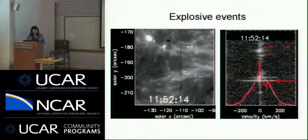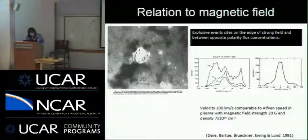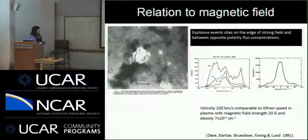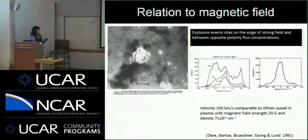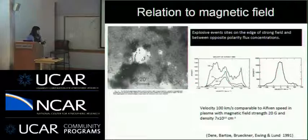Just some quick background. Explosive events are tiny bright spots with enhanced emission as well as large blue and red wings in the light spectrum. Before the IRIS era, lots of work was done with similar data, and those works managed to establish a connection between sites of explosive events and strong magnetic field between opposite polarity flux cancellations. The magnetogram on the left shows locations of several explosive events, and as you can see, they mostly locate at boundaries between white and black patches.